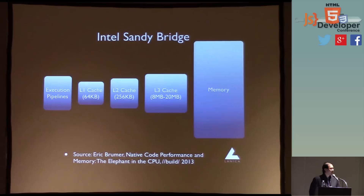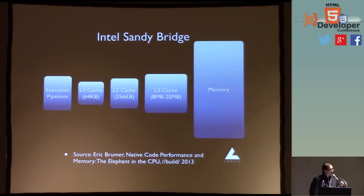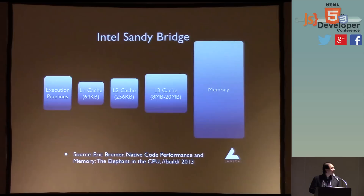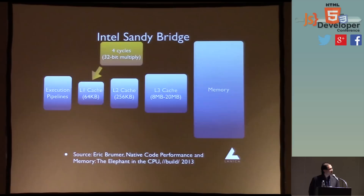If we start off on the execution pipelines, we do a bunch of computation and when we need to fetch information, we try to grab it from the caches. If we can't get it from the first cache, we go to the second, then the third, then main memory. How long does it take to fetch four bytes from the L1 cache? Four cycles. And in four cycles you can actually do a 32-bit multiply. So in just fetching some information from cache, you could have already done an entire multiplication.